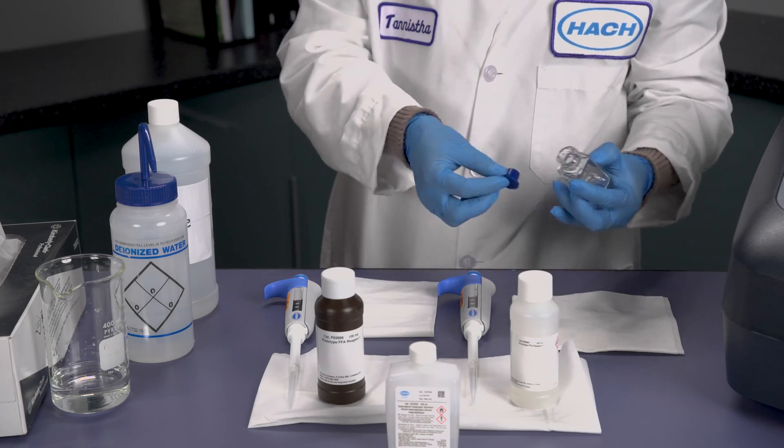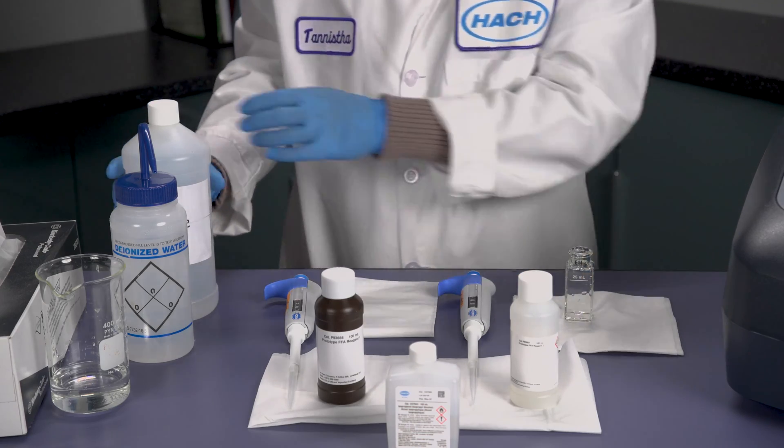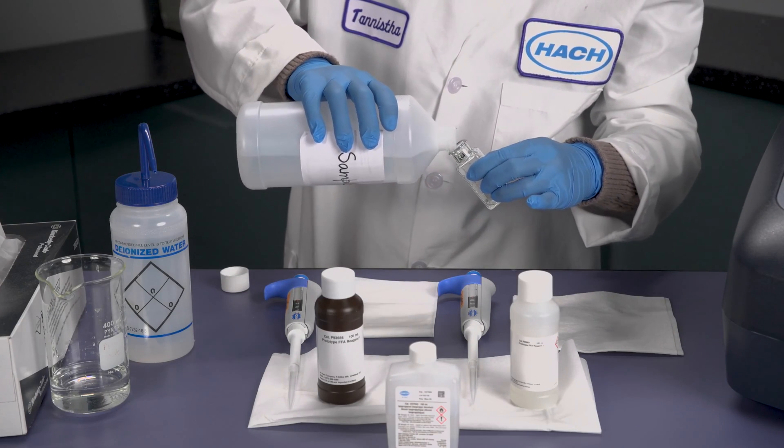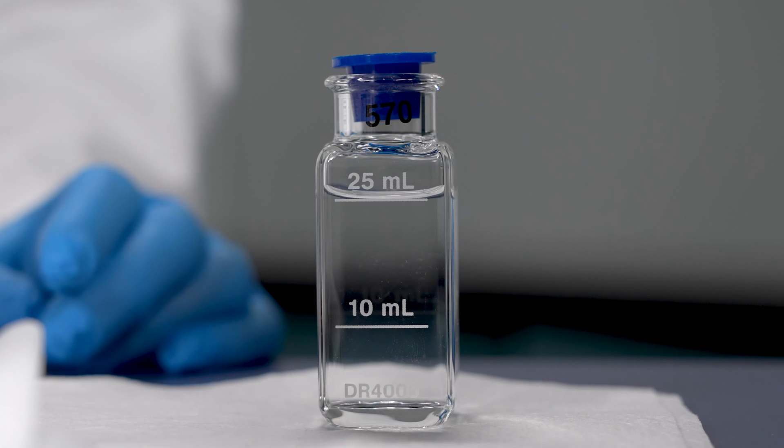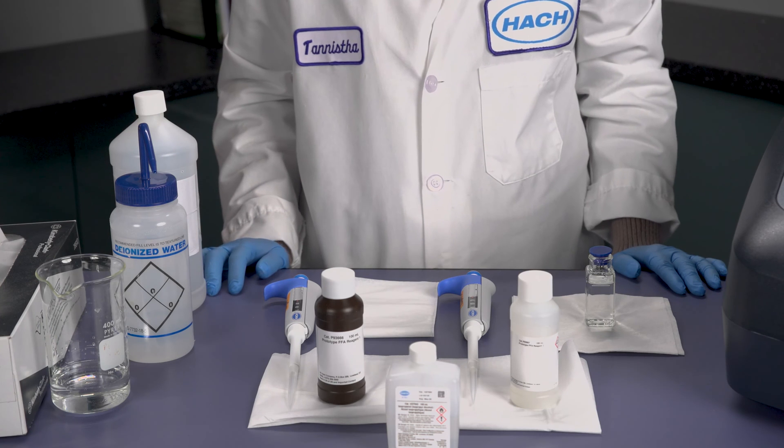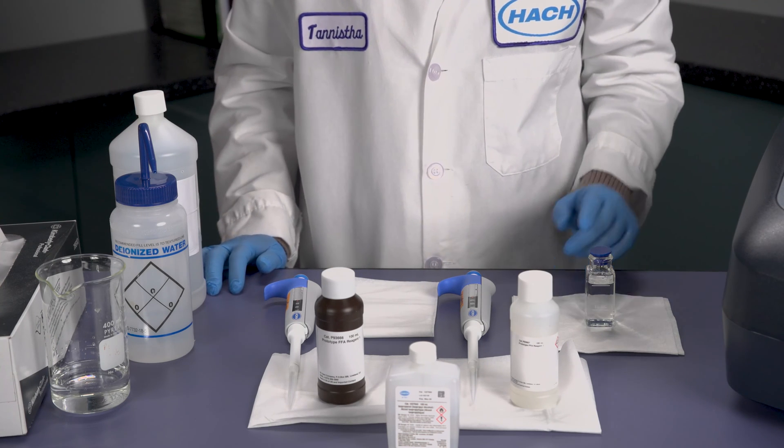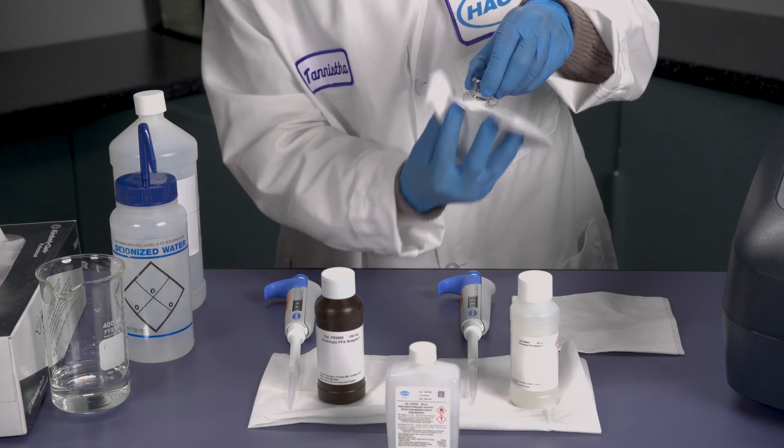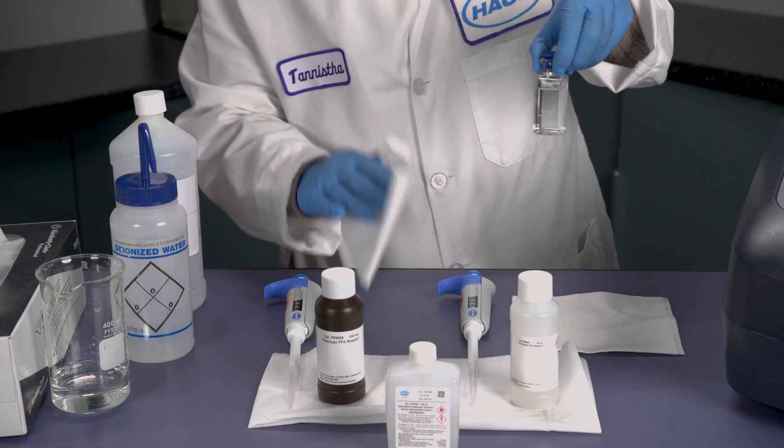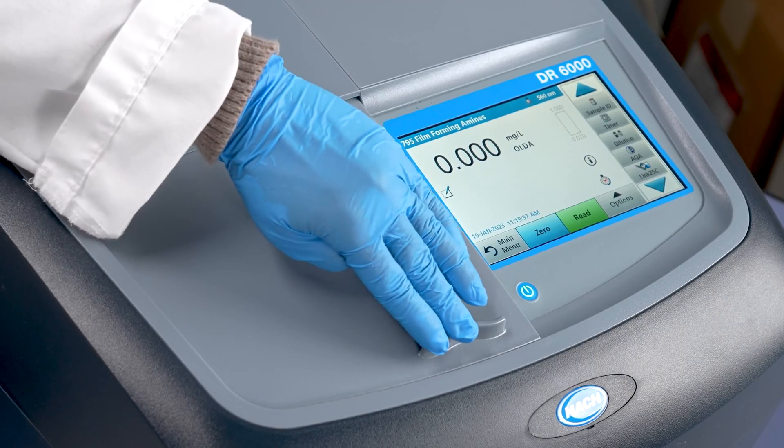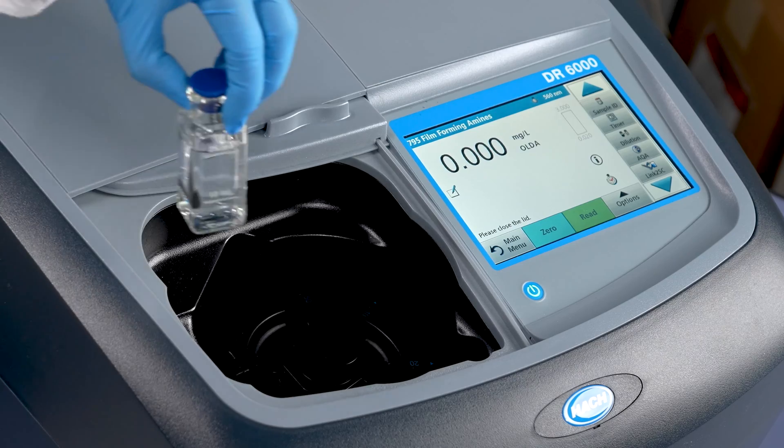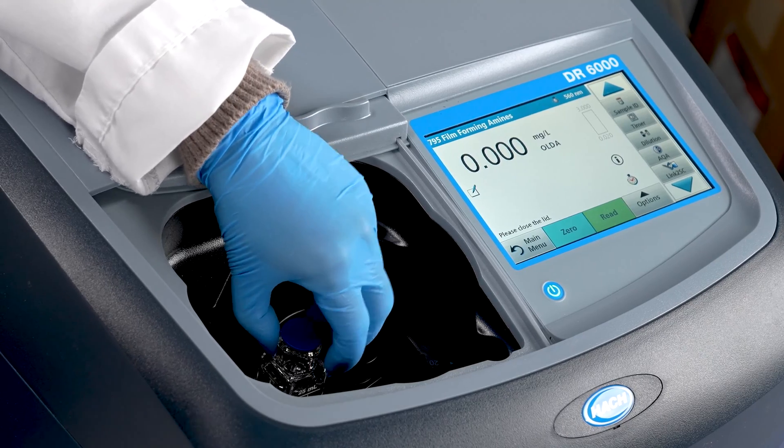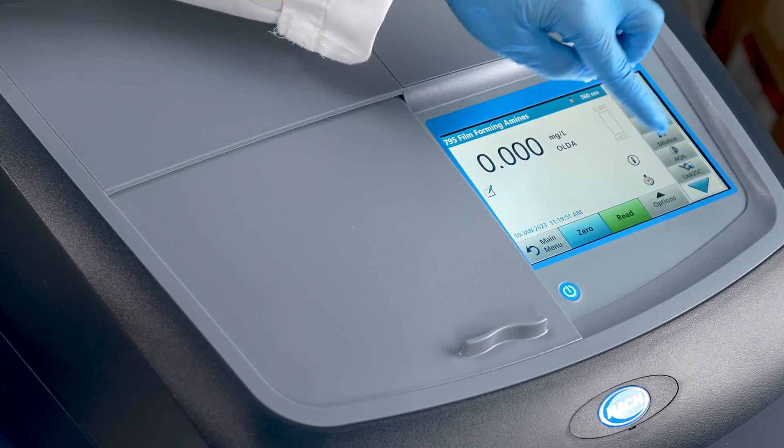Now we're ready to fill the sample cell with the sample. It's important to add the sample to the 25 ml mark as accurately as possible. At this point, the first thing we need to do is to zero the sample cell. Let's first make sure that you've cleaned the sample cell thoroughly with chem wipes to prevent any fingerprints or anything that may cause inaccurate readings. The sample cell should be placed in the spectrophotometer, if it's a DR6000, with the 25 ml mark facing you. On a DR3900, the 25 ml mark should be facing to the left. Now we'll zero the instrument.